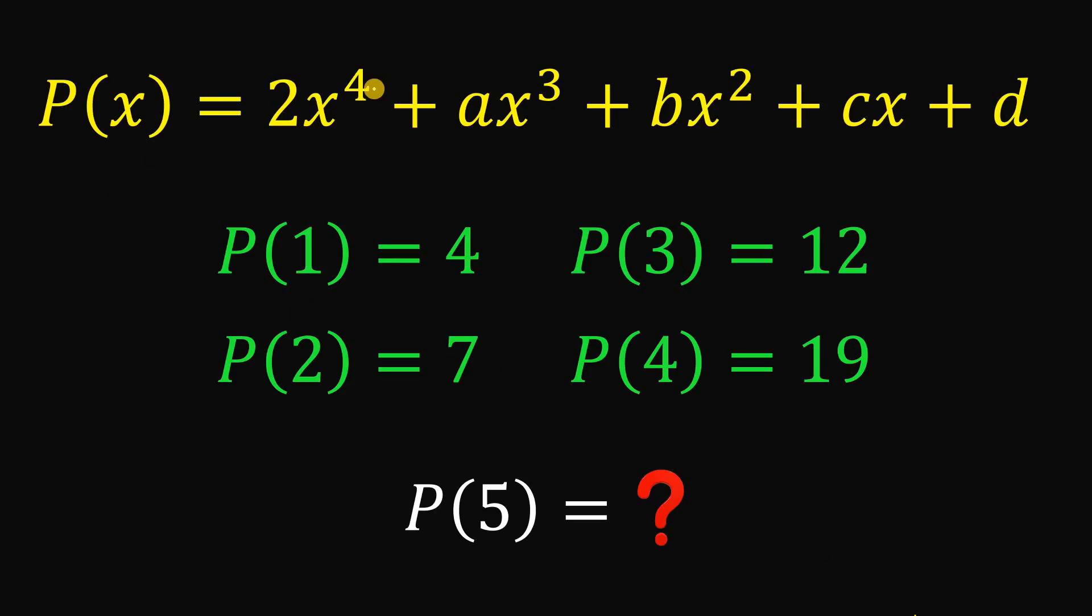Given P of x equals 2 times x to the fourth power plus ax cubed plus bx squared plus cx plus d. Also given that P of 1 is 4, P of 2 is 7, P of 3 is 12, and P of 4 is 19.